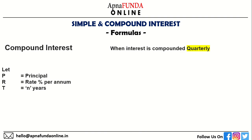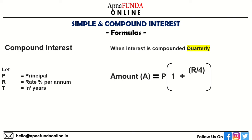Similarly, when interest is compounded quarterly, amount is equal to principal into 1 plus R by 4 divided by 100, whole to the power of 4N. In this case, the rate of interest gets divided by 4 and the time period becomes 4 times.